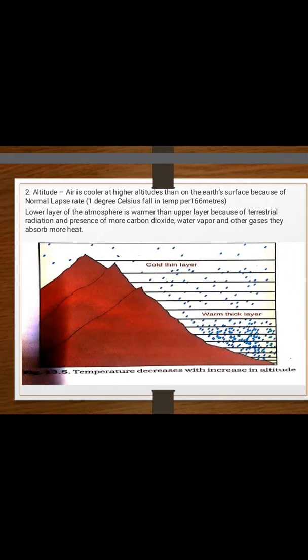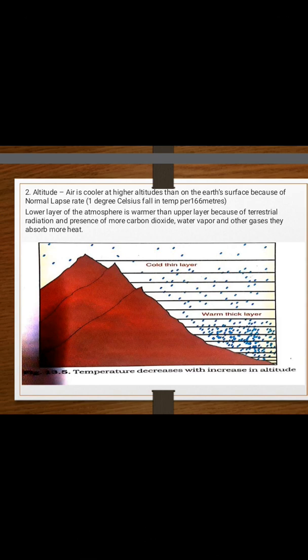Altitude: Air is cooler at higher altitude than at the surface because of the normal lapse rate. The normal lapse rate means temperature falls by 1.1 degree Celsius per 166 meters of height. The lower air layer of the atmosphere is warmer than the upper layer because of terrestrial radiation and the presence of more carbon dioxide, water vapor, and gases that absorb more heat.